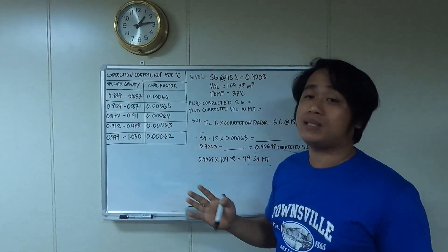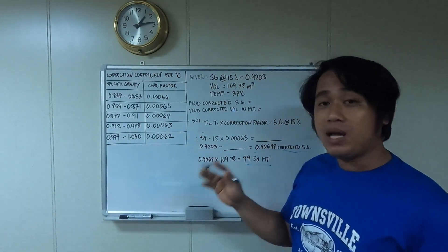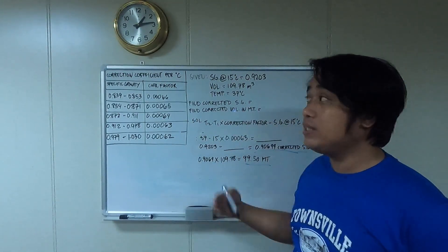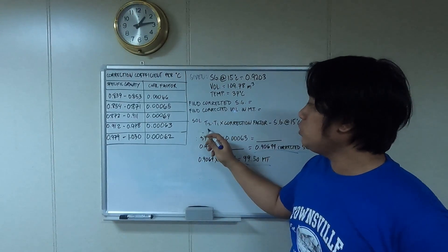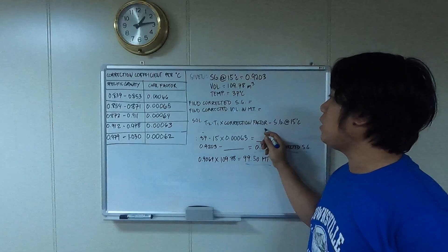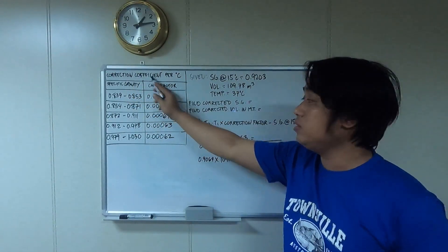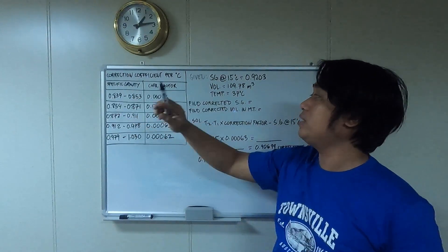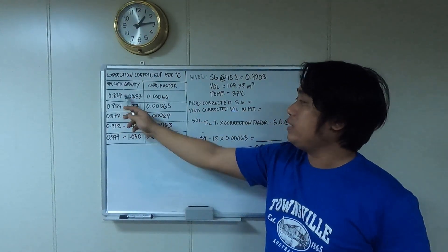The formula for taking this answer is: temperature 2 minus temperature 1 times correction factor. We have the table here with the correction factor. This is the specific gravity and the correction factor table where we find the value of SG.